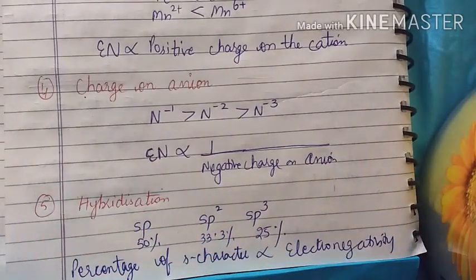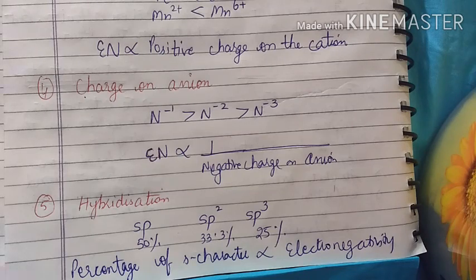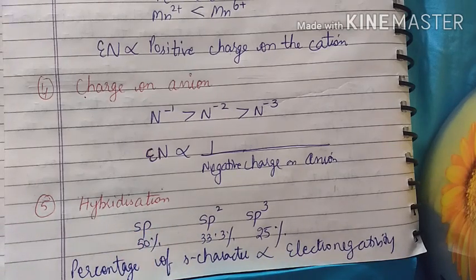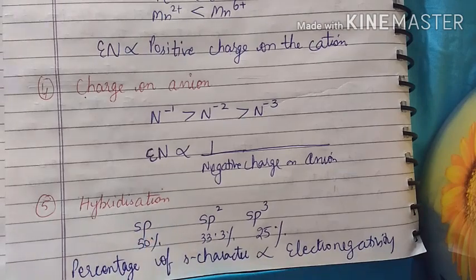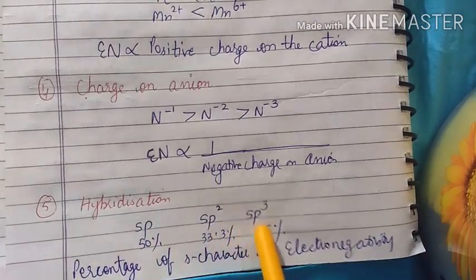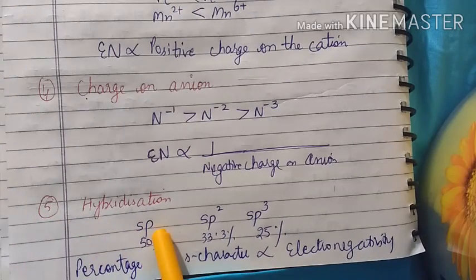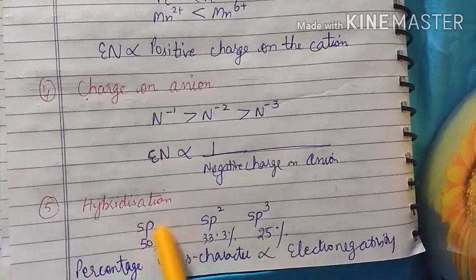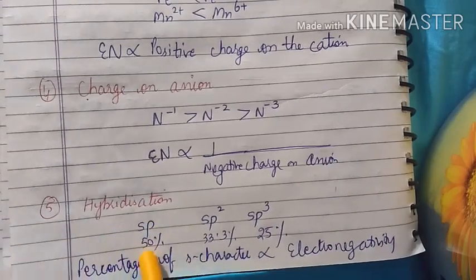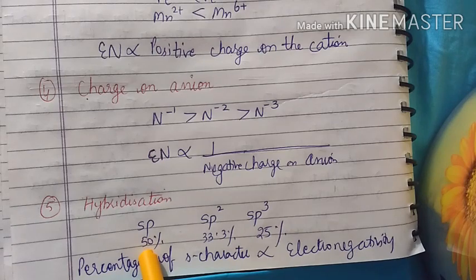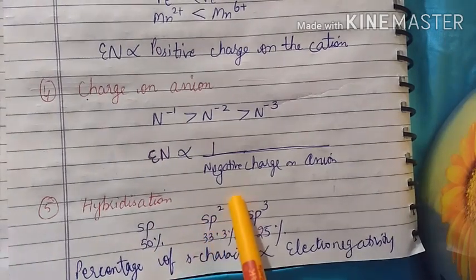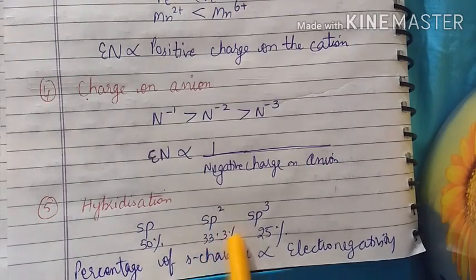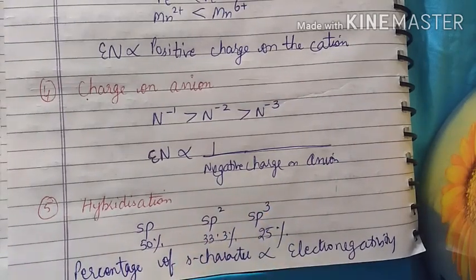Hybridization. SP, SP2, SP3 hybridization. One S and one P orbital mix to form SP; one S and two P to form SP2; one S and three P to form SP3. SP has 50% S and 50% P character. SP2 has 33.3% S character. SP3 has 25% S character. Greater the S character, greater the electronegativity.